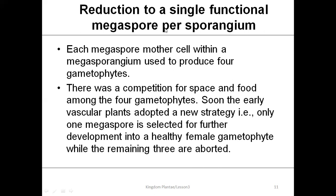Reduction to a single functional megaspore: each megaspore mother cell within the megasporangium used to produce four gametophytes, and there was competition for space and food among them. Early vascular plants adopted a new strategy where only one megaspore survived — the fittest — and the rest were aborted. Out of four, three were aborted.